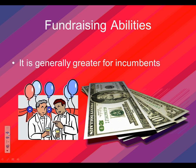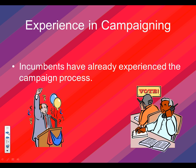Fundraising: incumbents get a ton more contributions from not only individuals, but also political action committees, or PACs. The reason a PAC is going to donate to the incumbent is they're already in office, they have a relationship with them, and they know they can win. PACs are limited, however, only to $5,000. But you'll notice most challengers do not get any PAC money, while incumbents get a ton of that. So you're able to generate a lot of money, which helps you get your name out and run TV ads.